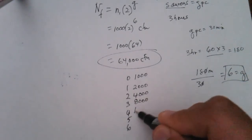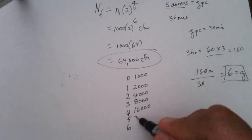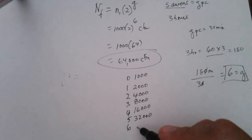And then it's going to become 16,000. Then it's going to become 32,000. And then it's going to double one more time. So it becomes 64,000 CFUs.